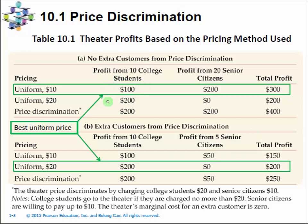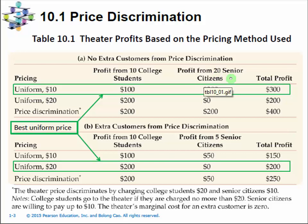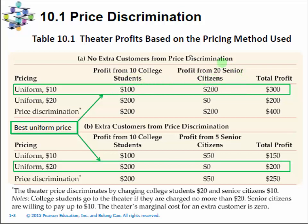Let's look at this question. We assume there are college students who have a higher willingness to pay — they will pay $20 for a movie ticket. And there are senior citizens who have a lower willingness to pay — they only pay $10 for a movie ticket. In Panel A, we have 10 college students and 20 senior citizens as the customer base for this movie theater.